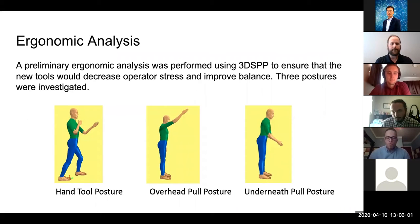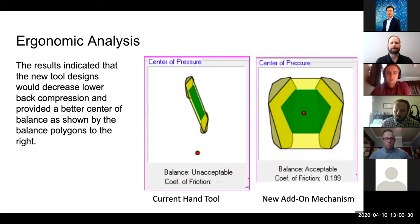To help us understand the process at Rio Tinto and to evaluate design solutions, we used software called 3DSPP to evaluate the ergonomics of different positions. We evaluated the current hand tool posture, overhead pull posture, and underneath pull posture. The software allowed us to determine quantitatively how good the postures were in balance and also provided compression for certain joints and muscles in the body. We found that the current hand tool had unacceptable balance condition. The red dot is outside of the balance polygon. Our new add-on mechanism provides an appropriate balance posture, as well as decreasing the stresses induced in the body.